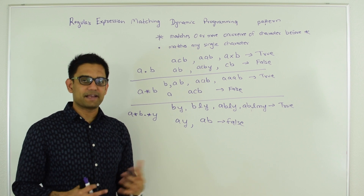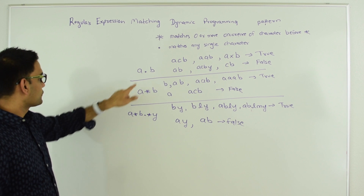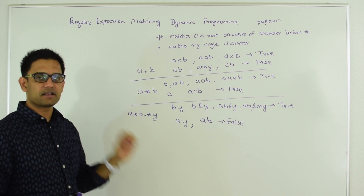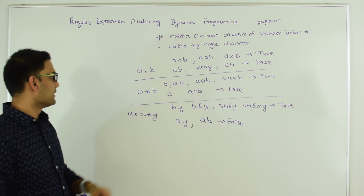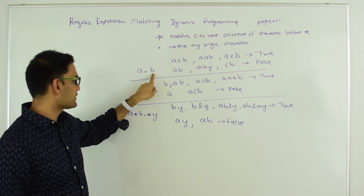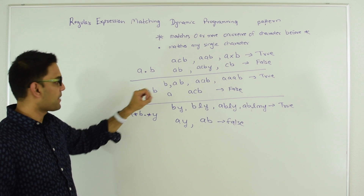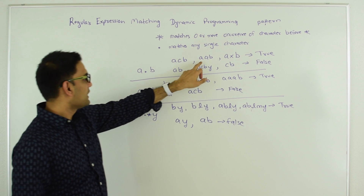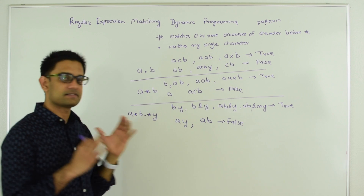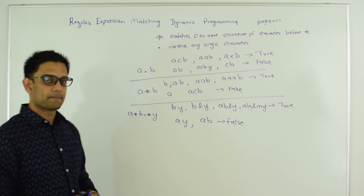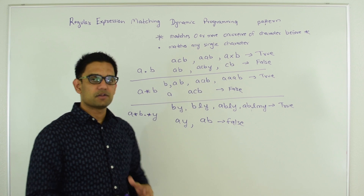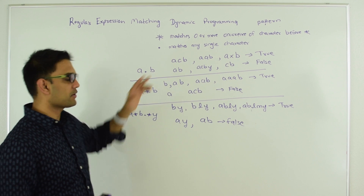Let me explain with an example. Consider the pattern A dot B — here we can have any single character between A and B. So if my text is ACB and my pattern is A dot B, that is a regular expression match. AXB and AAB are also matches, as long as there is any single character between A and B. On the other hand, AB, ACBY, and CB are not a match with A dot B.